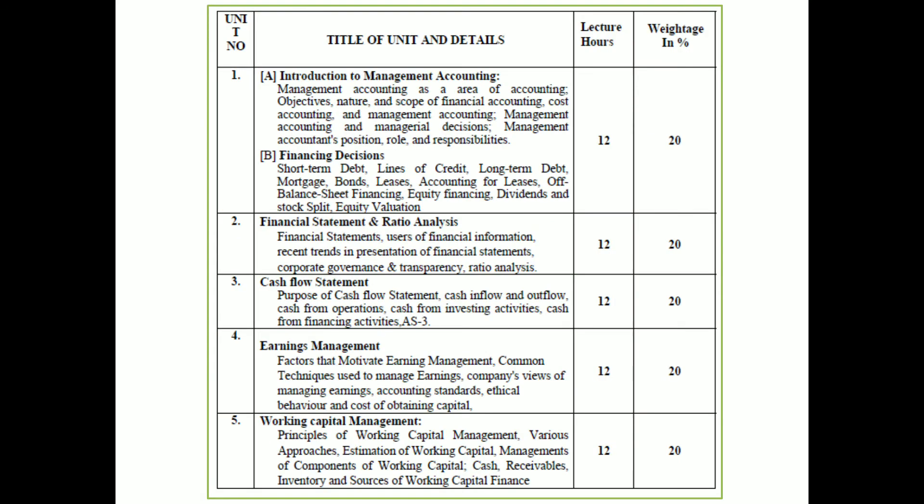Unit 1 is divided into two parts. The first part is Introduction to Management Accounting — covering what is Management Accounting, its Objectives, Scope, Managerial Decision, Roles and Responsibility. The second part is Financing Decision, where basic short notes and definitions are covered, that is Short Term Debt, Lines of Credit, Long Term Debt, Mortgage, Bonds, Leases, etc.